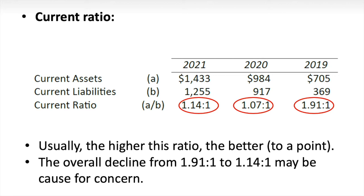Usually, the higher the current ratio the better, because it shows the company has more cash to pay ongoing liabilities — though that's only true to a point, as the company should also be reinvesting cash wisely. The decline in current ratio over time may be a cause for concern, although there's some evidence the trend is not totally downward and may be correcting. There's reason to dig in and learn more.